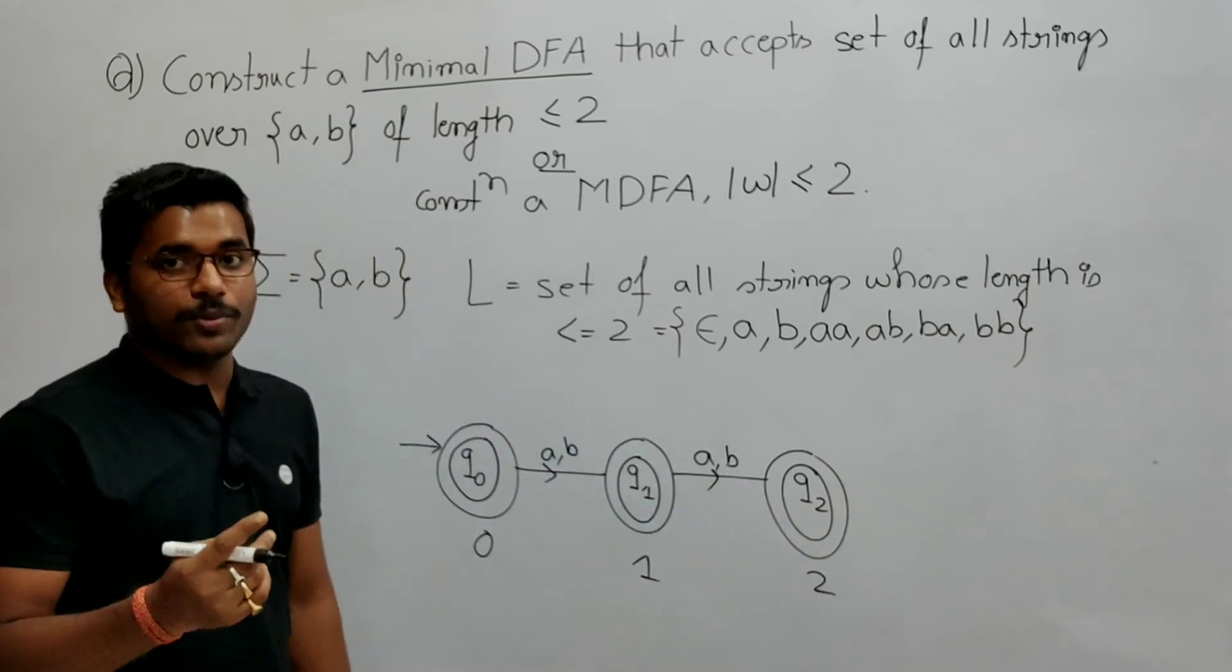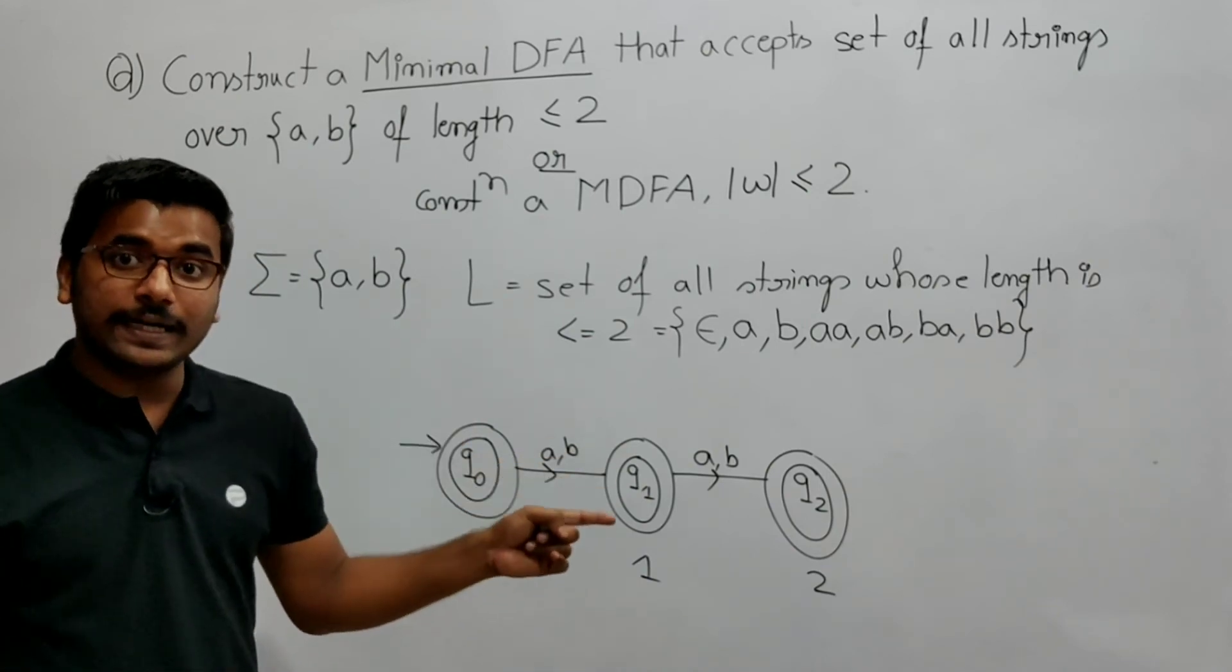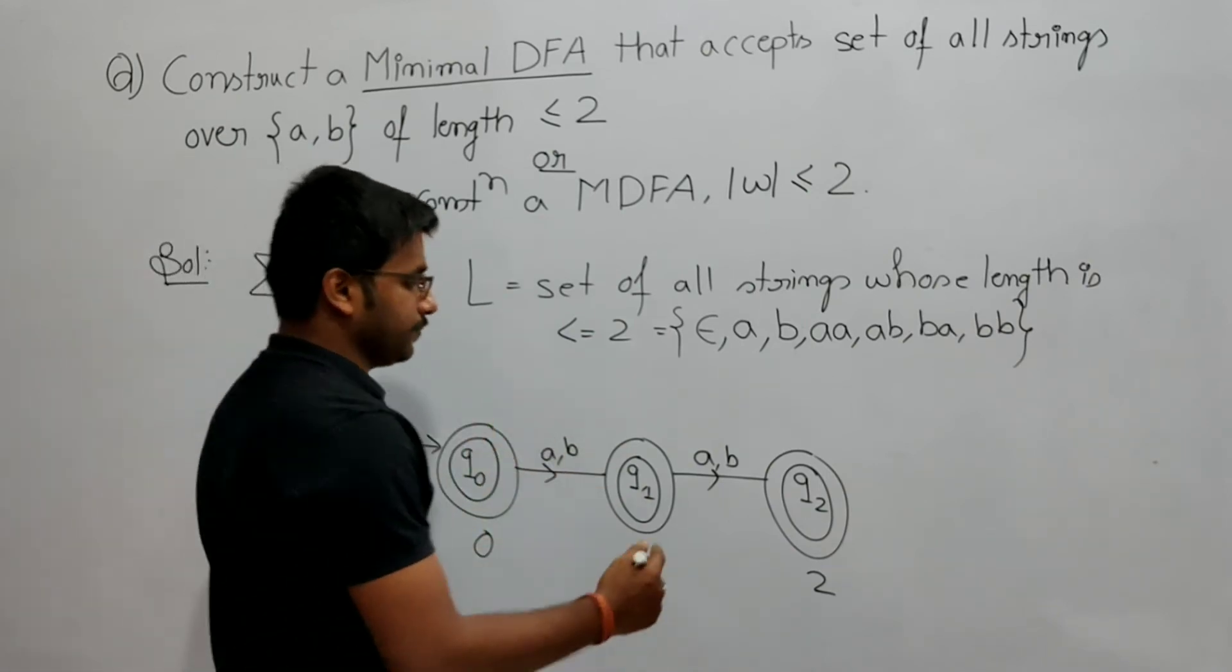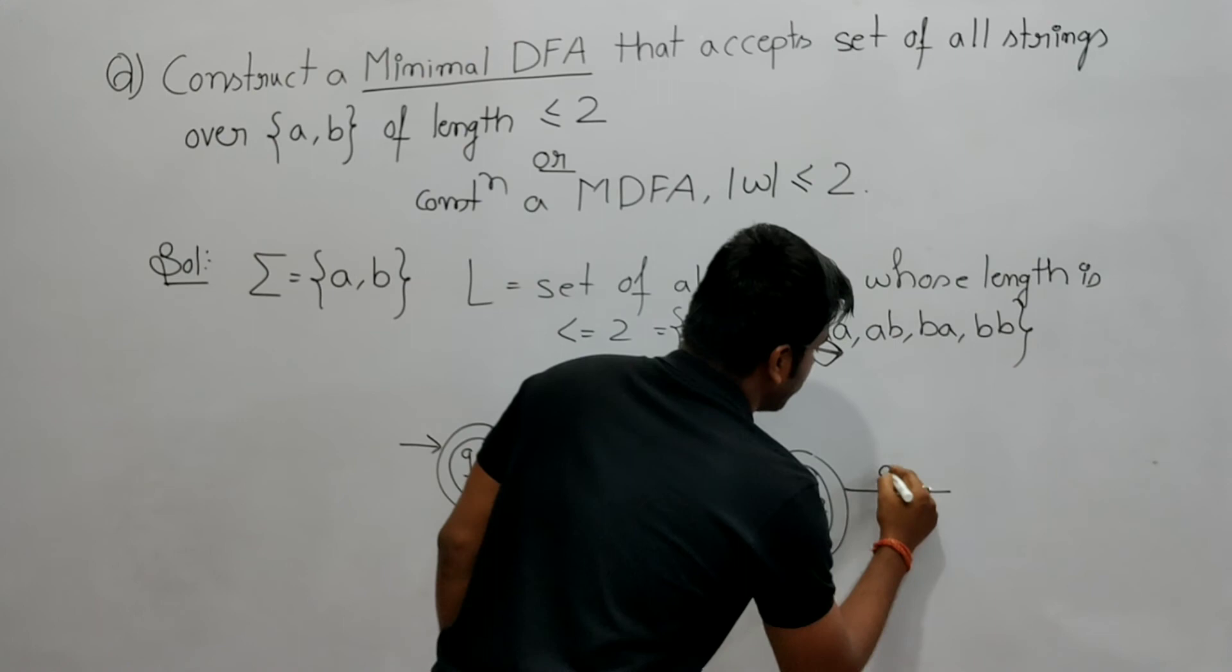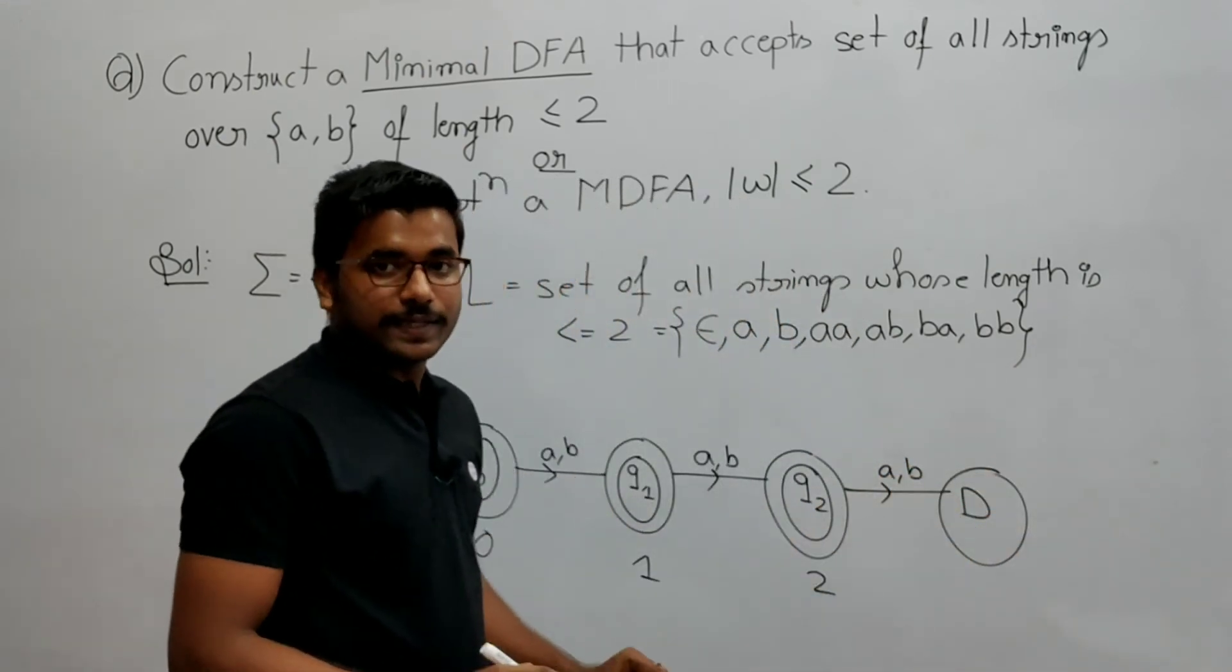Now q2 will get either a or b, length will become 3, but it does not belong to this. So here I need to create a dead state. So by getting a or b, now length is 3, so there is no chance that it will ever get accepted.